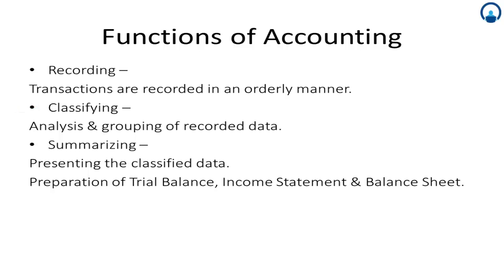The work of classification is done in a book called the ledger. After recording and classifying, the third step is summarizing. This involves presenting the classified data in a manner that is understandable and useful to both internal and external users of accounting statements. This process leads to the preparation of the trial balance, the income statement, and the balance sheet.